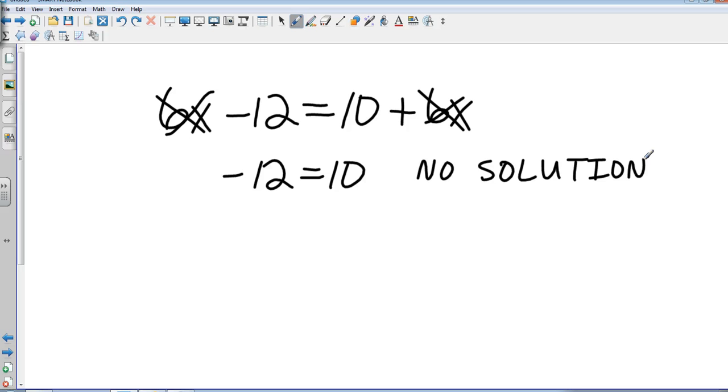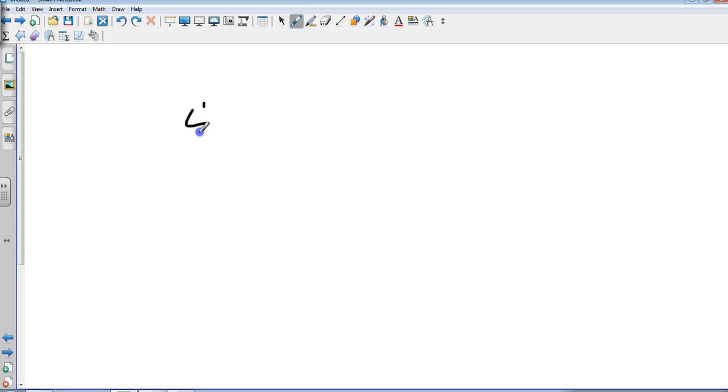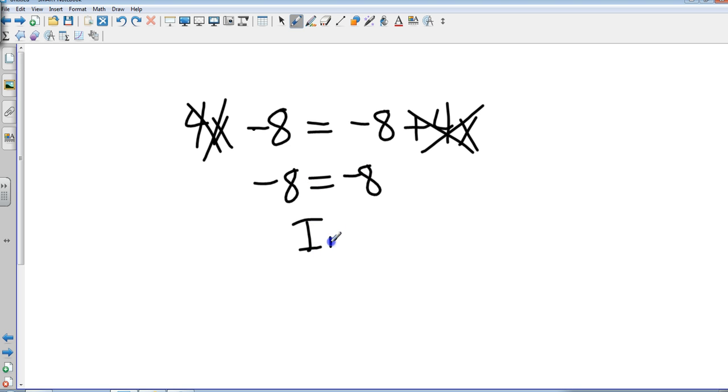And then the other one, the infinite solution, that's when the number would equal itself. So in another example, if I had something like that, the positive 4x's cancel. Negative 8 equals negative 8. So that would be the same line. So that would be infinite solutions.